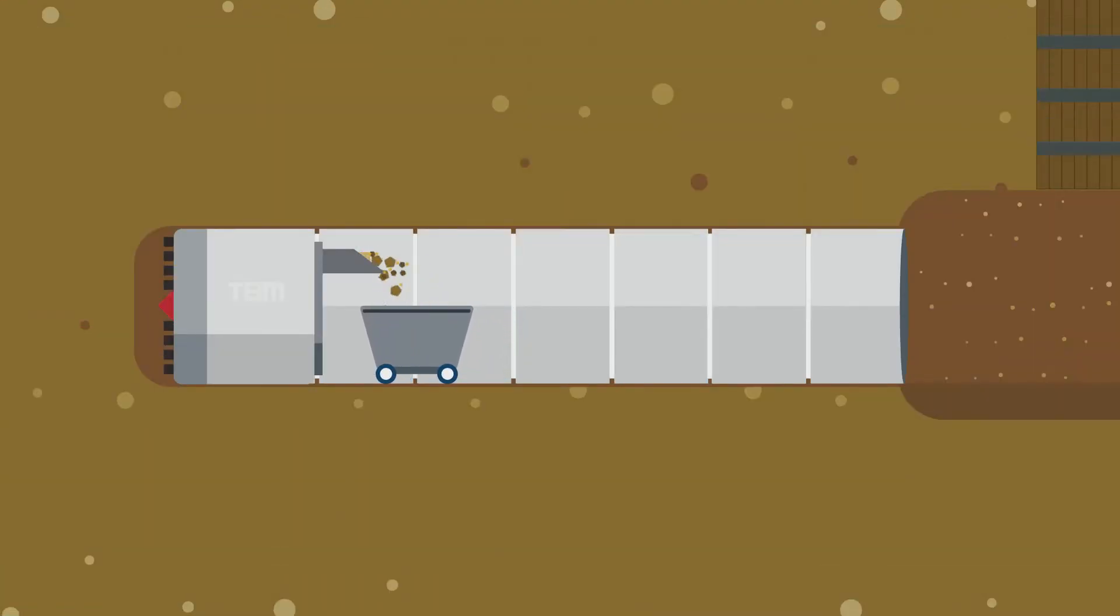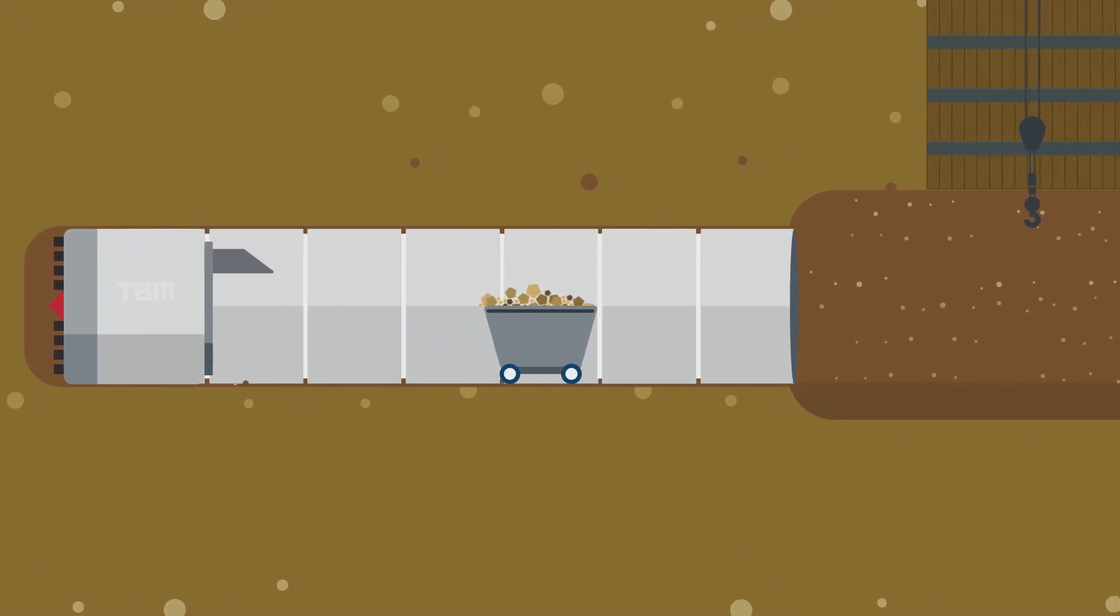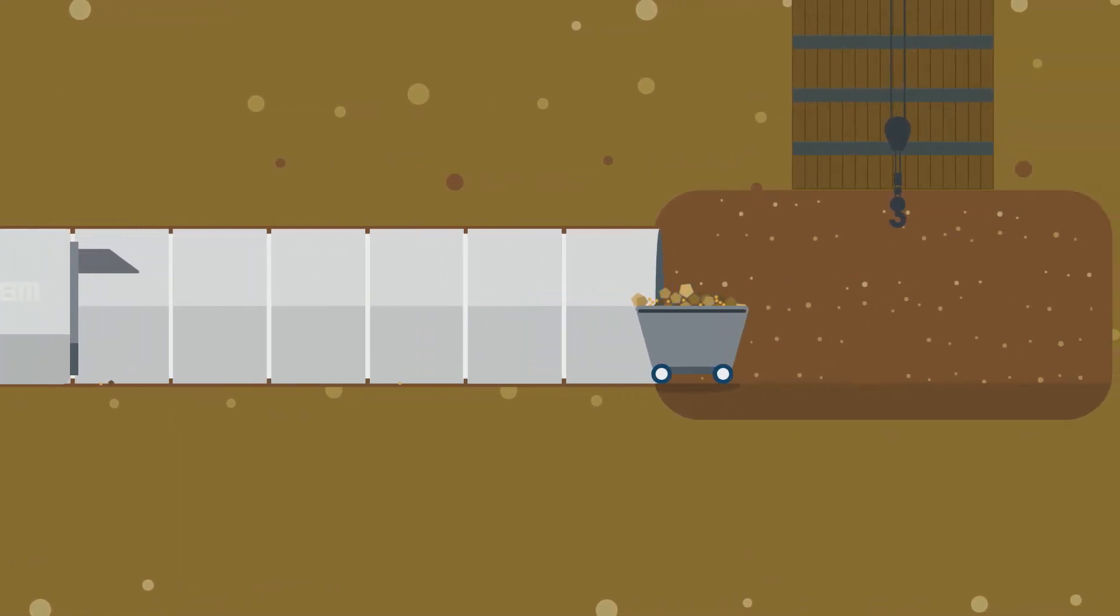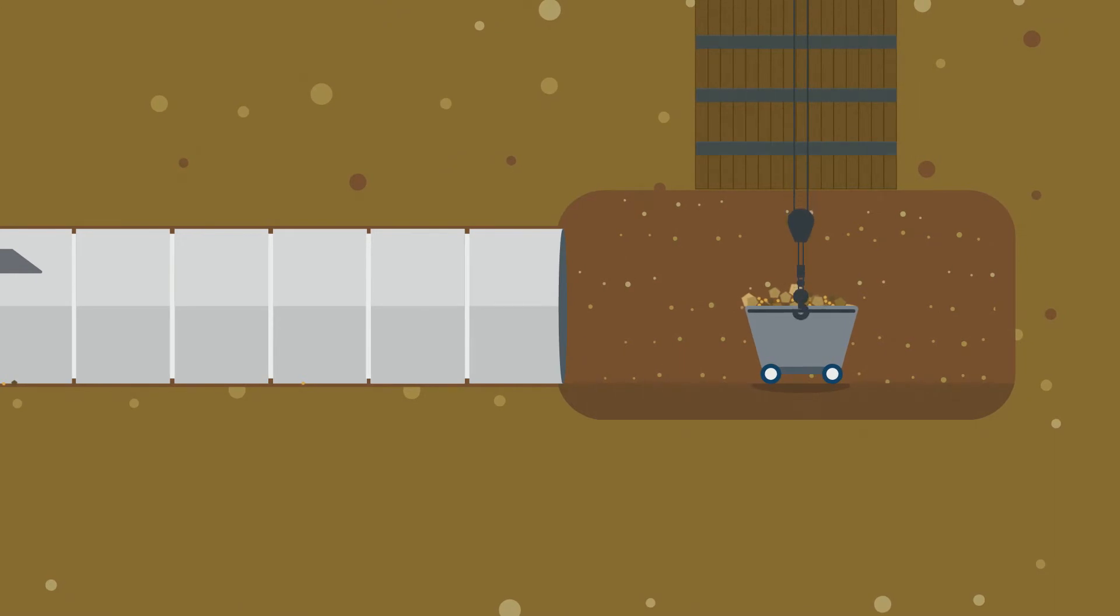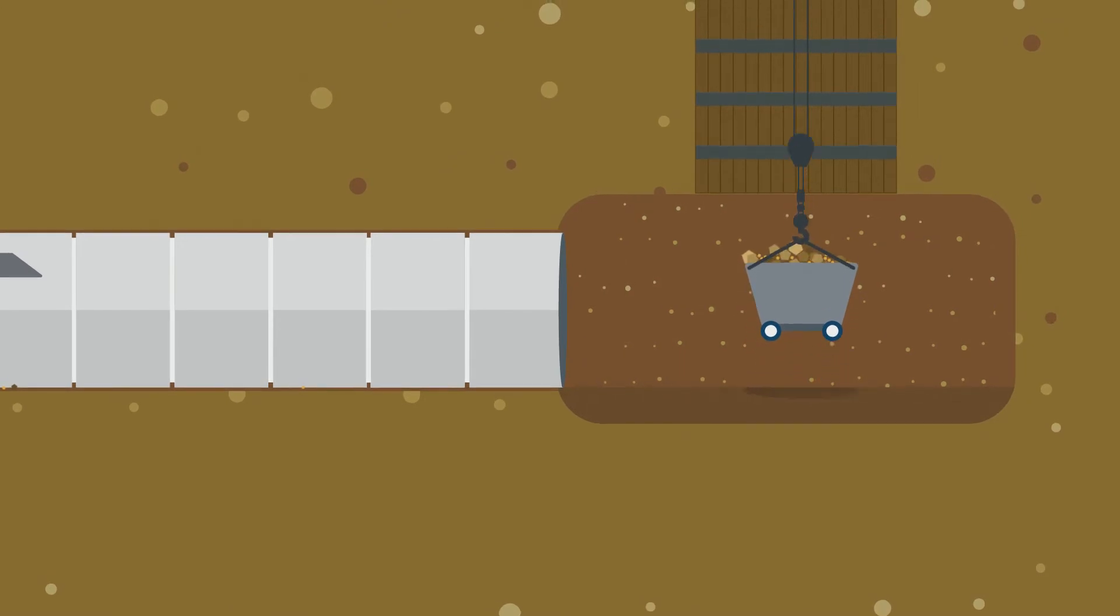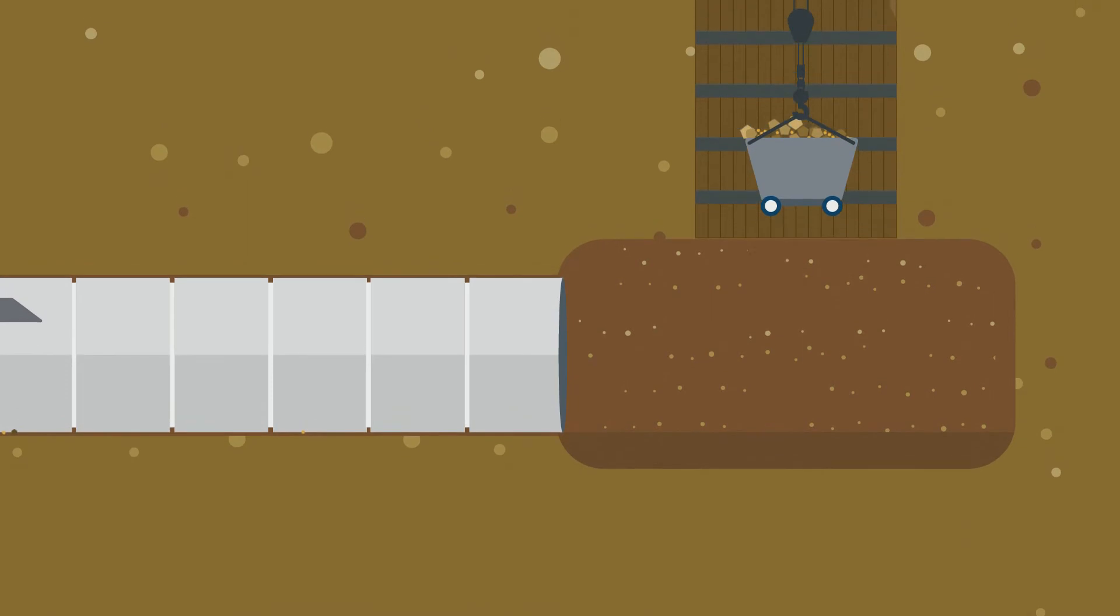Excavated material is moved out of the tunnel using a conveyor and train car system. Train rails are set up on the tunnel floor so the train cars can travel safely, and when the train cars arrive at the working shaft, they are raised above ground and the excavated dirt is disposed of.